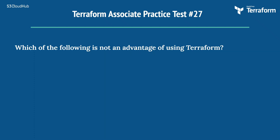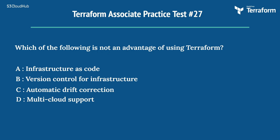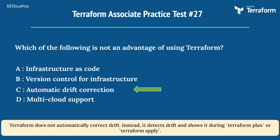Question 27: Which of the following is not an advantage of using Terraform? Options: A) Infrastructure as code, B) Version control for infrastructure, C) Automatic drift correction, D) Multi-cloud support. The right answer is C) Automatic drift correction. Terraform does not automatically correct drift; instead, it detects drift and shows it during terraform plan or terraform apply.